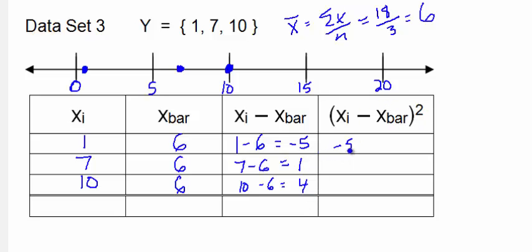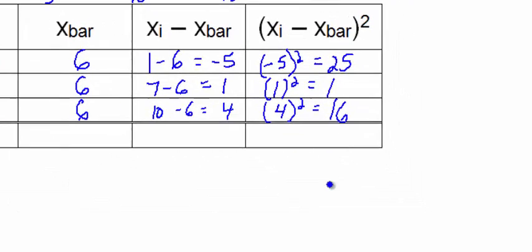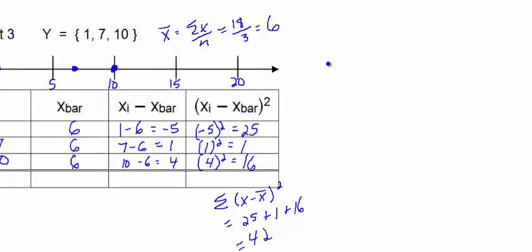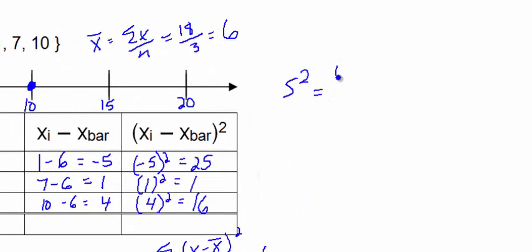Negative 5 squared is 25, 1 squared is 1, and 4 squared is 16. So if we add up the deviations squared we have 25 plus 1 plus 16, so this makes 42. So to compute the sample variance which is denoted s squared, we take 42 and divide by 3 minus 1, which is 42 divided by 2, which is 21.